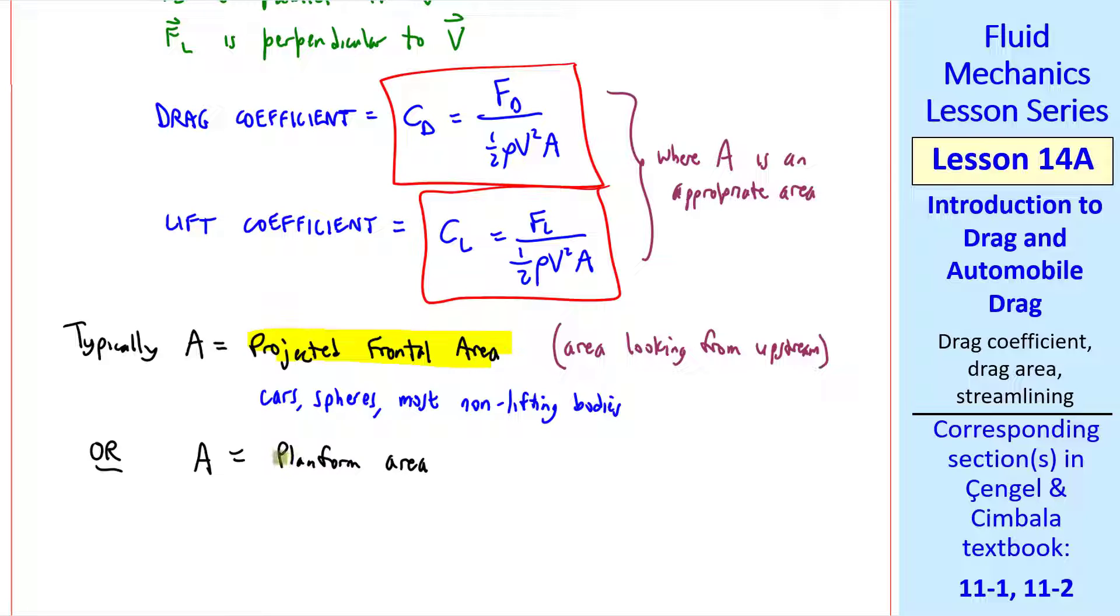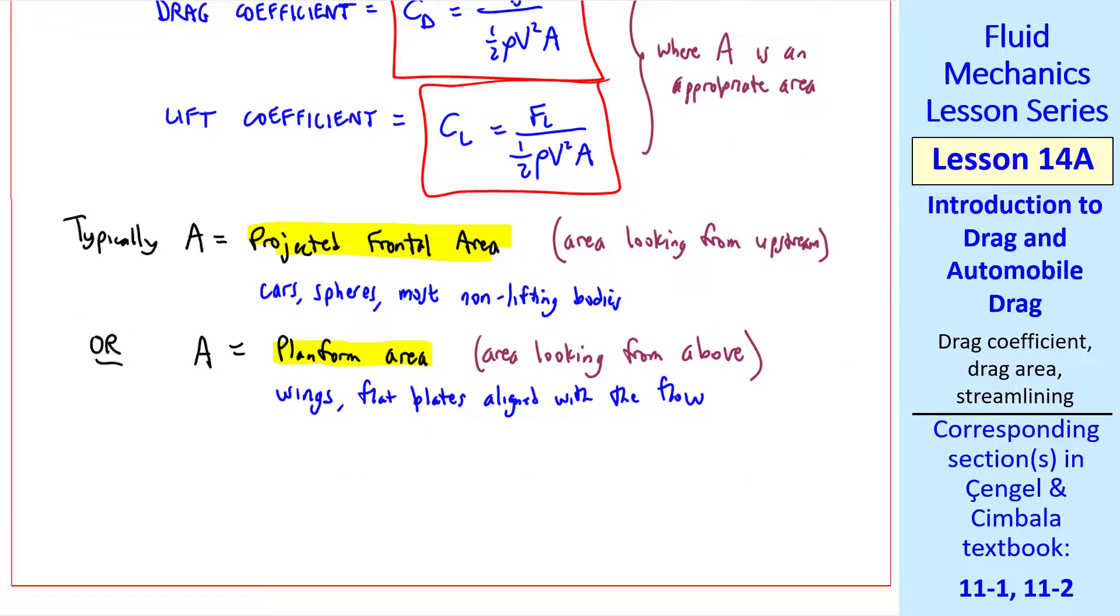Alternately, we can define a planform area, which is the area looking from above. This is more appropriate for wings, which are lifting bodies, and flat plates aligned with the flow. This is necessary because if you have a wing, the frontal area is very small, but the planform area would be much larger.